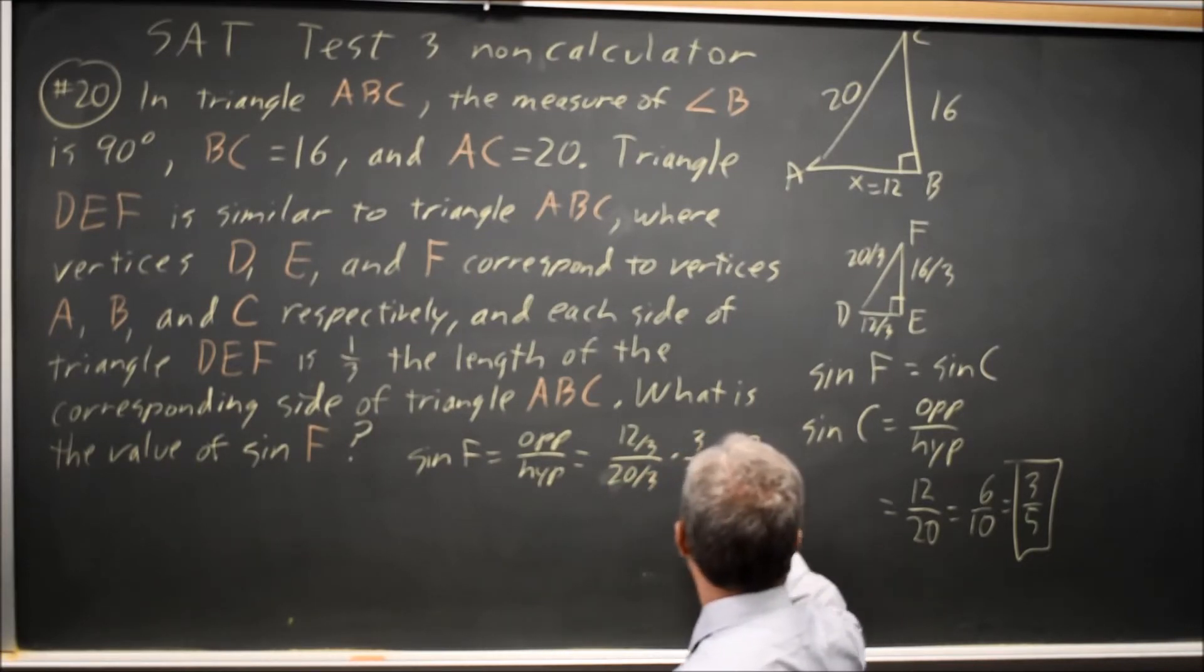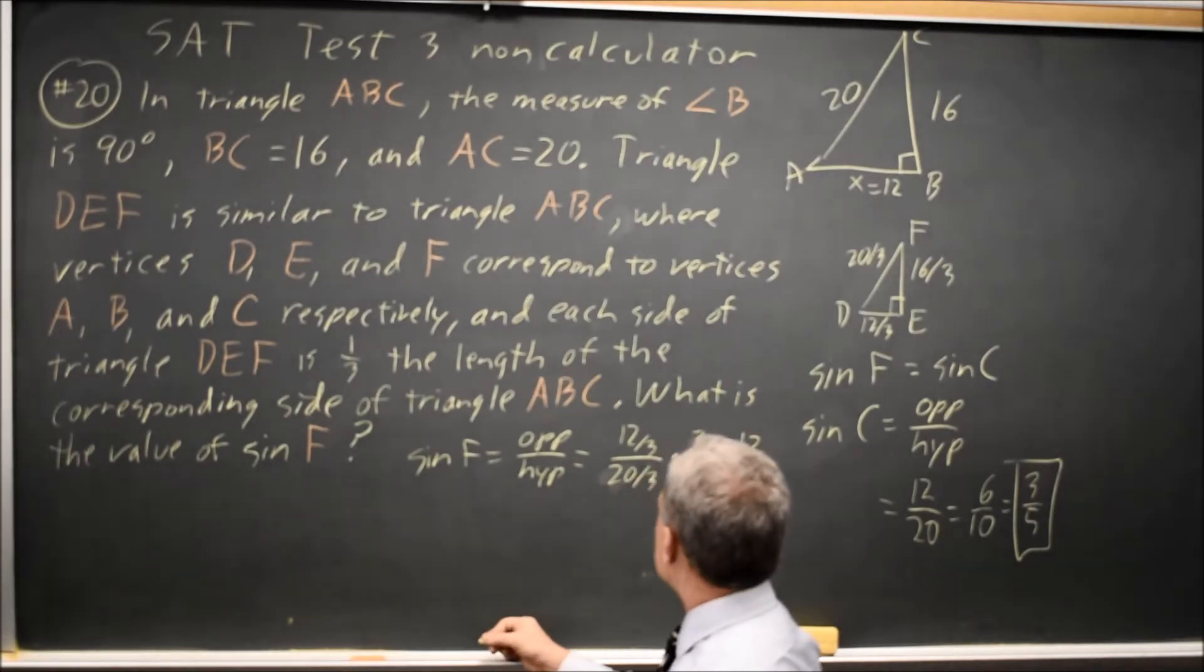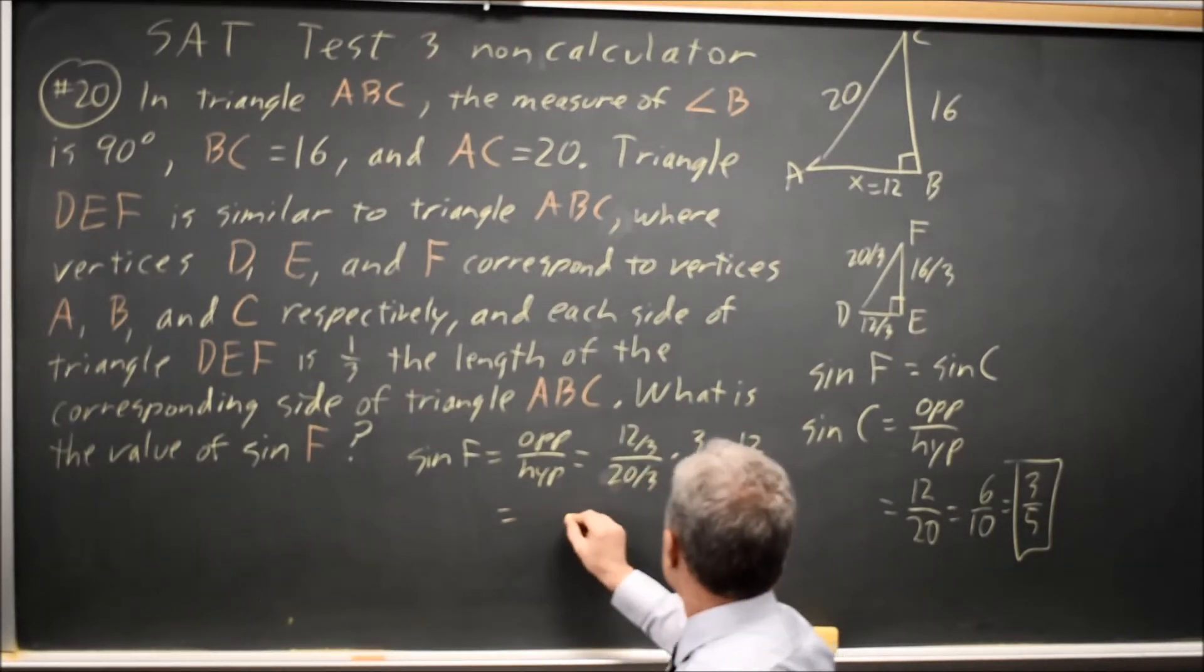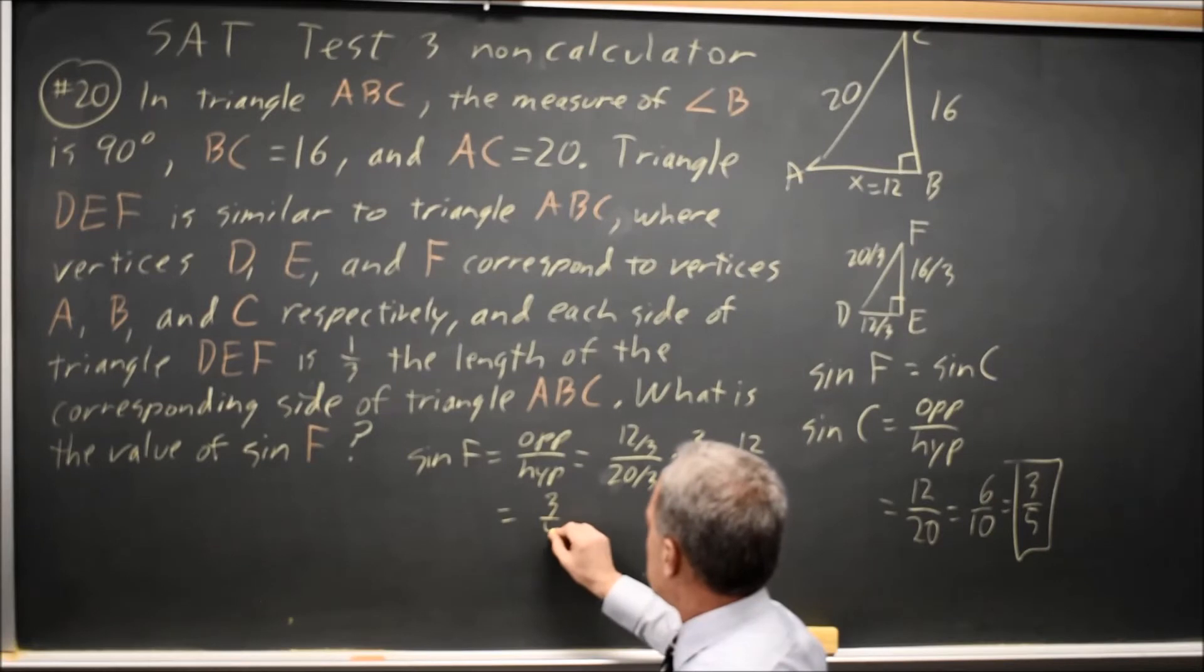And if I multiply that by 3 thirds, I get 12 over 20, the same value I got for C. So it simplifies to the same value of 3 over 5.